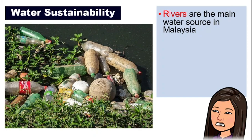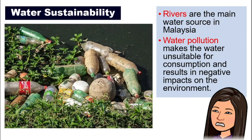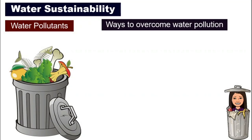In Malaysia, rivers are the main water source. However, water pollution — just like in this picture — means we cannot use that water. Water pollution makes water unsuitable for us to consume and will also give a very negative impact on our environment. So let's take a look at a few water pollutants and how we can overcome water pollution.